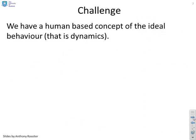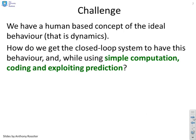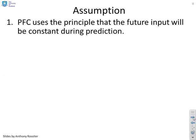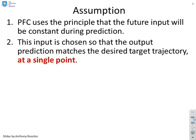So the challenge. We've got a human-based concept of ideal behavior or ideal dynamics. How do we get the closed-loop system to have this behavior while using simple computation, simple coding, and obviously exploiting prediction, because that makes sense. So PFC uses the principle that the future input will be constant during prediction. This input is chosen, and this is the key point, is chosen so that the output prediction matches the desired target trajectory at a single point. That's the key part of PFC.